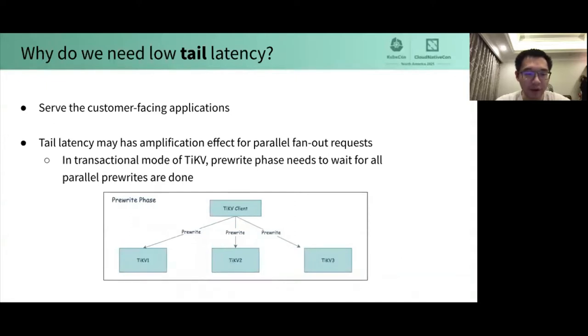Next question I'd like you to think about is why we need low tail latency. Tail latency is the tail end of our system's response time spectrum, and is often expressed as 99 percentile response times. TiKV usually serves the customer-facing applications. The customers can only see the applications are slow, and they don't care about whether they have encountered low probability events.